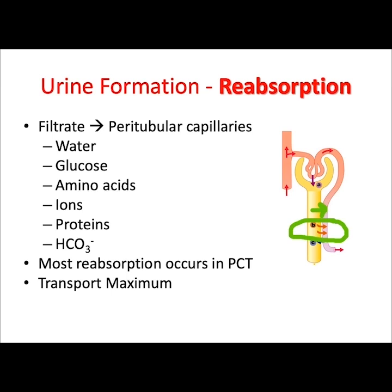When you are using transport proteins, the solutes bind to binding sites on the proteins. When all binding sites are occupied, the carriers have reached transport maximum. Any additional solutes that are unable to bind to the binding sites will remain in the filtrate and become part of the urine. This is seen during uncontrolled diabetes mellitus, where glucose that is not able to be reabsorbed ends up in the urine.